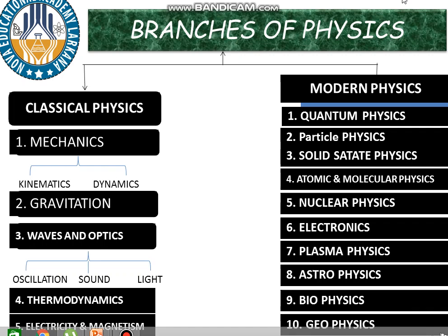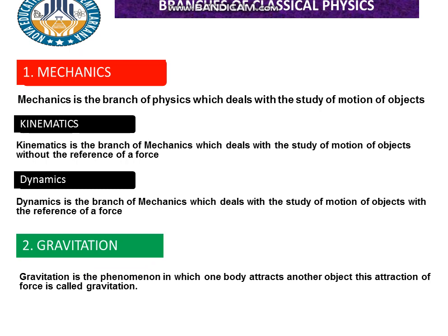Welcome back to Nova Educational Academy. In the first lecture we discussed physics. Today we are going to define the branches of physics. As you know, physics has been divided into two categories: classical physics and modern physics. In the first lecture we listed the branches - five branches of classical physics and ten branches of modern physics. Let me start from the first branch.